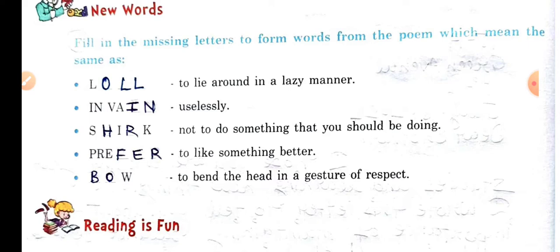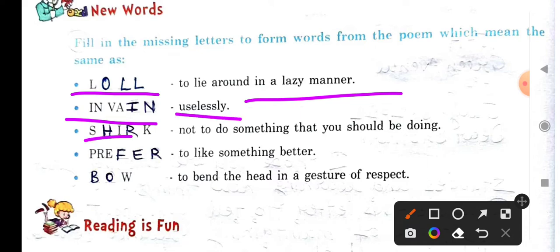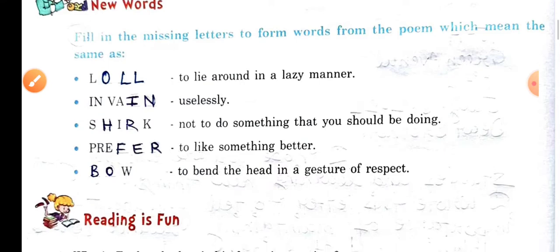Fill in the missing letters to form words from the poem. The words mean: 'loll' means to lie around in a lazy manner; 'in vain' means uselessly or not doing something that you should be doing; 'prefer' means to like something better; 'bow' means to bend the head in a gesture of respect.